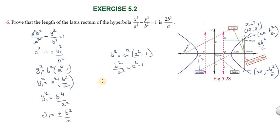To find the length of the latus rectum, we take the distance between points (ae, b²/a) and (ae, -b²/a). The total distance LL' is b²/a + b²/a, since both points are equidistant from the x-axis.